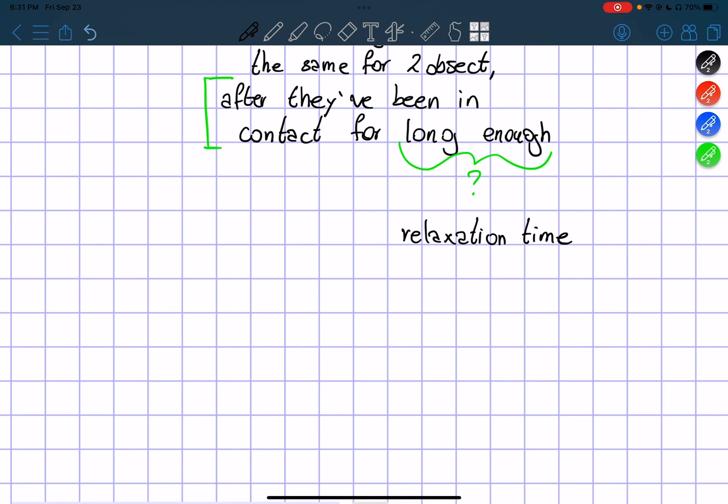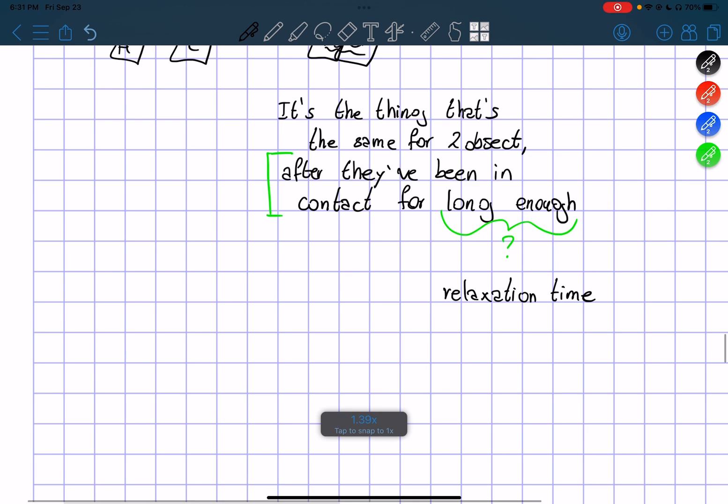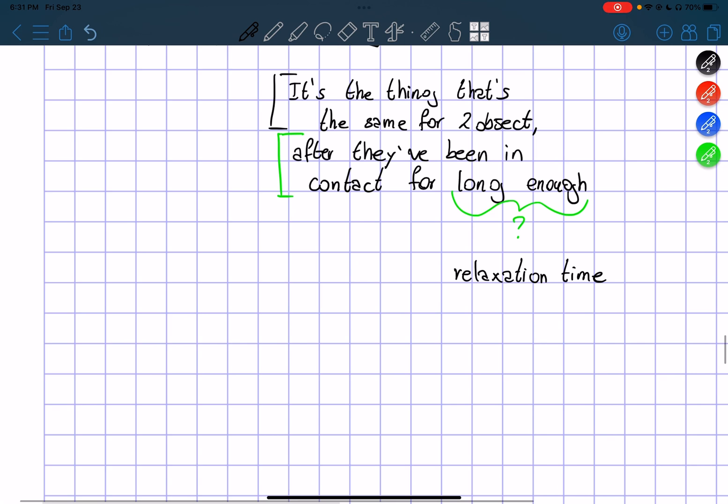Let's think about our definition of temperature. Temperature is something that is the same for two objects. There's many ways you can think about two objects. Plus, what is contact? If you put things in contact for a long time, they actually change a lot of things.